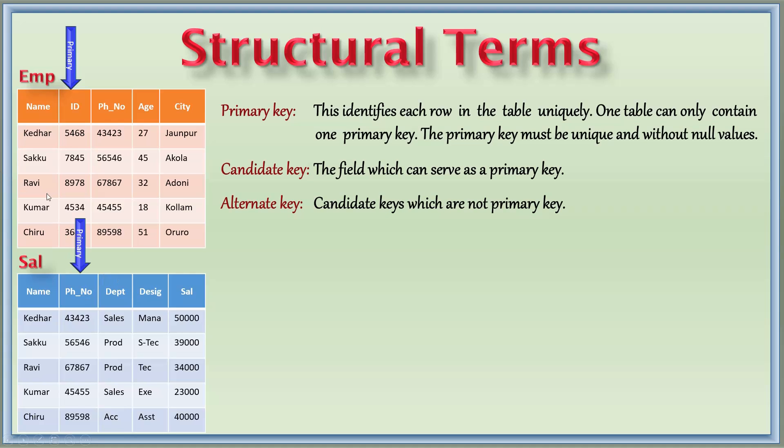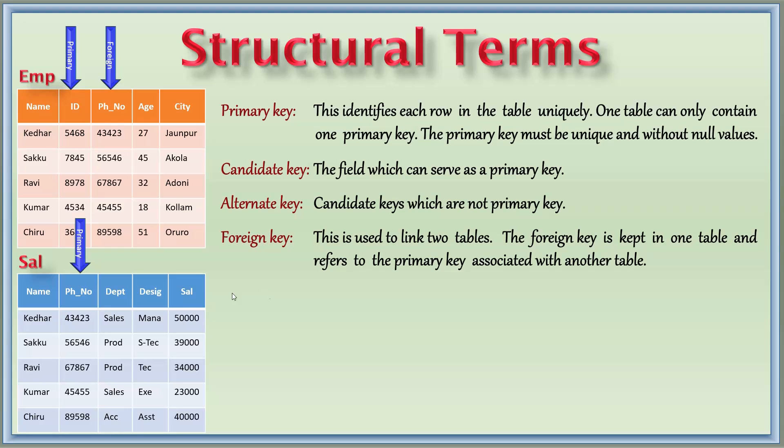In case we want to extract the details combining both the tables, then we can refer similar columns to identify the same value and append the new table as a view for us. So here phone number, this becomes foreign key for the salary table. Foreign key is used to link two tables. The foreign key is kept in one table and refers to the primary key associated with another table. So here in the second table it is a primary key, but in the first table phone number becomes a foreign key for the salary table.